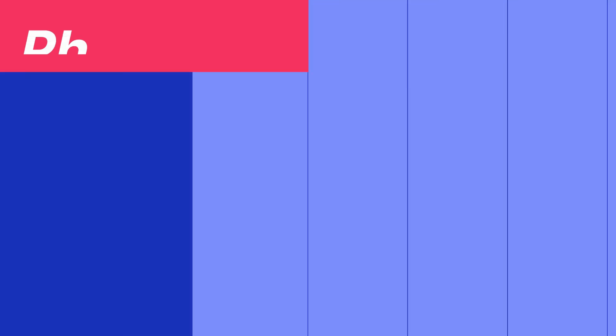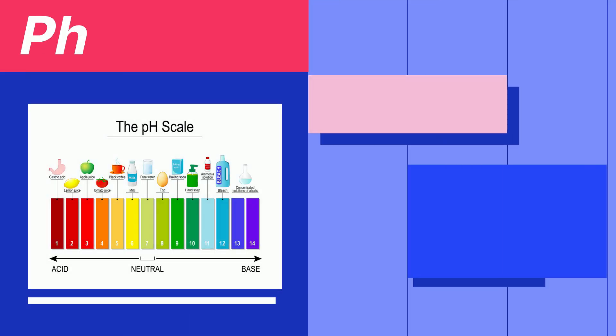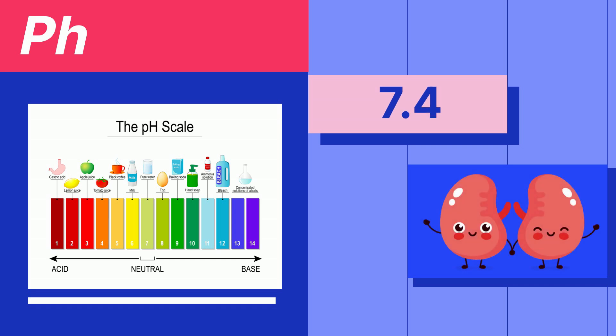pH regulation: the body maintains a constant pH of about 7.4. This is done through the kidneys, which filter out acids and bases from the blood.